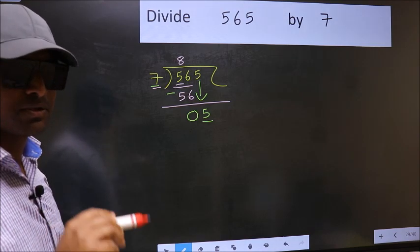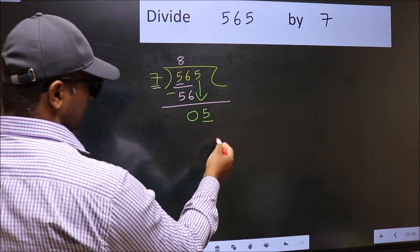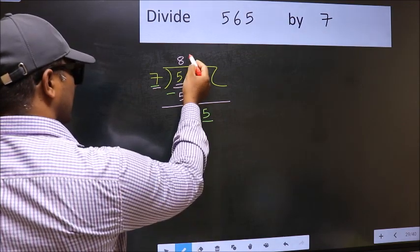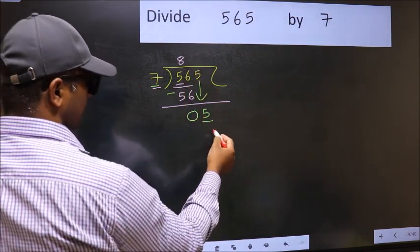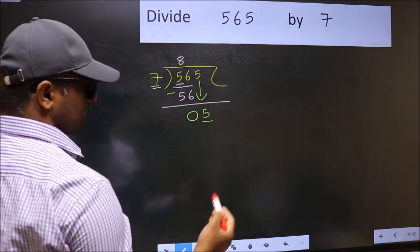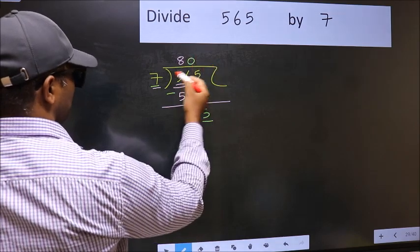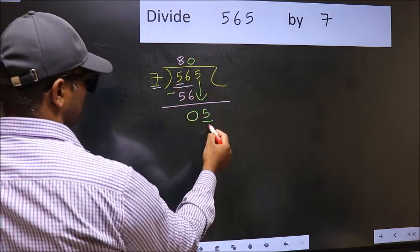Instead, what you should think of doing is, what number should we take here? If I take 1, we will get 7. But 7 is larger than 5. So what we should do is, we should take 0. So 7 into 0, 0.